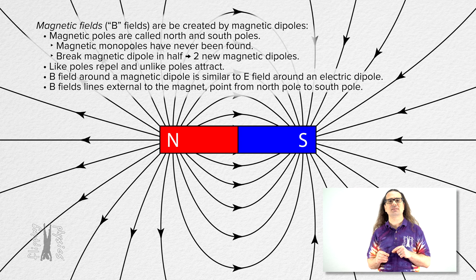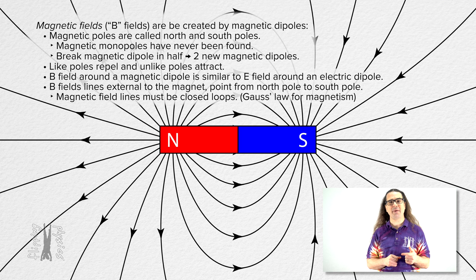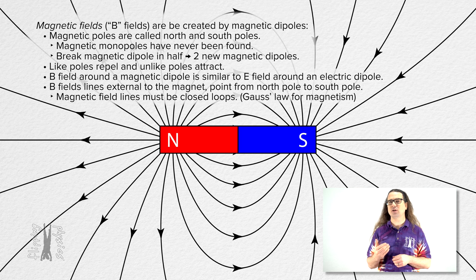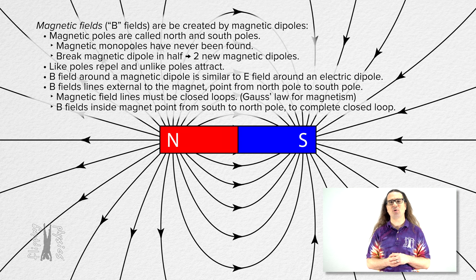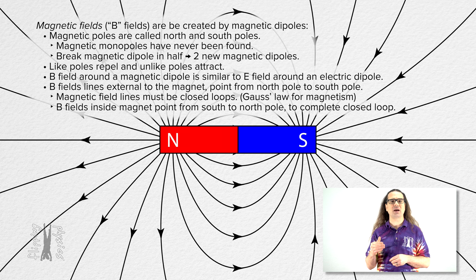I will point out that due to Gauss's law for magnetism, which we will get to eventually but not today, all magnetic field lines must be closed loops and therefore inside the magnetic dipole, the magnetic field points south to north to complete the loops.